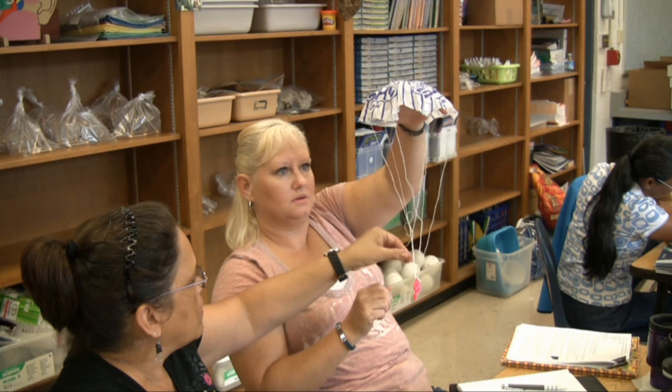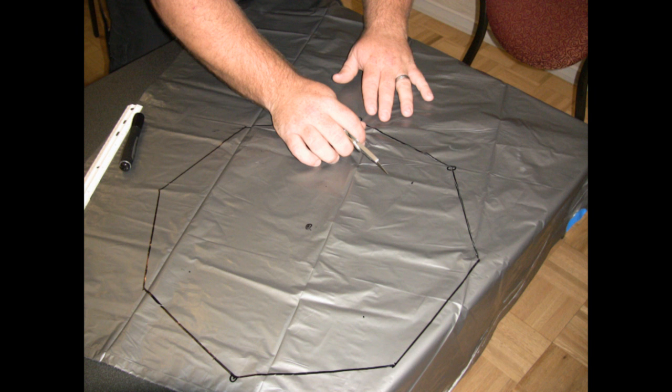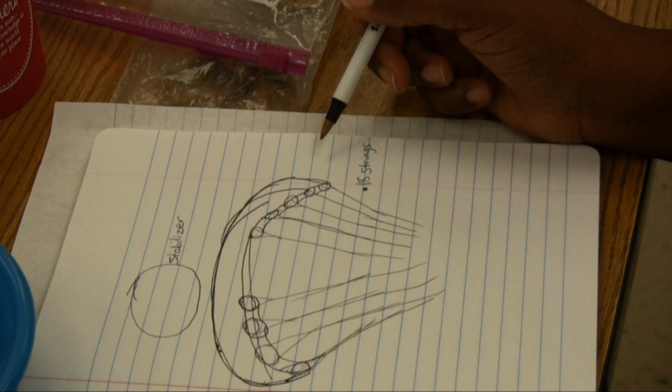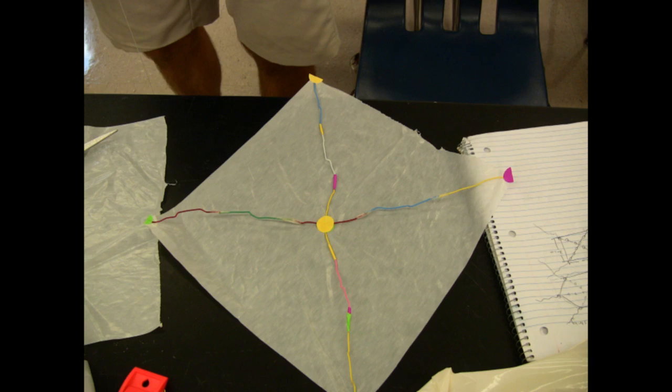Teachers then analyze different parachute models and how they operate. The teachers are then provided with a wide variety of materials to make a working parachute. They design, construct, and test their parachutes, redesigning if needed.